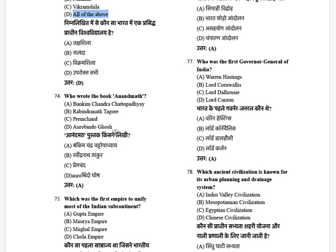Who wrote the book Anandmath? The options are: Bankimchandra Chattopadhyay, Ramkrishna Tagore, Premchand, and Aurobindo Ghosh. The answer is Bankimchandra Chattopadhyay.